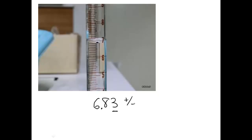The uncertainty, again, it's half of the smallest subdivision, which would be the same as the last one, 0.05 milliliters. So that's how you would record that.